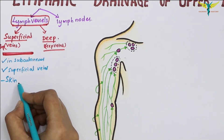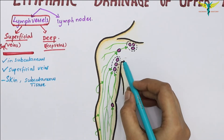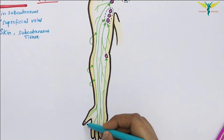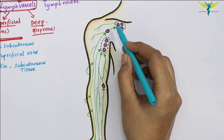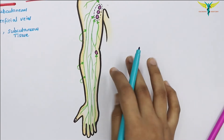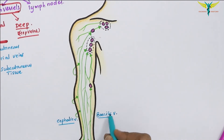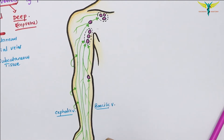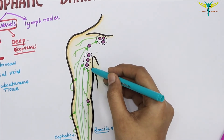Most superficial lymph vessels end in the axillary lymph nodes. Those from the lateral side of the limb — the lateral two digits — follow the cephalic vein and drain into the infraclavicular lymph nodes. Some from the medial side of the limb — the medial three digits — follow the basilic vein. These lymph vessels following the basilic vein drain into the lateral group of the axillary nodes.